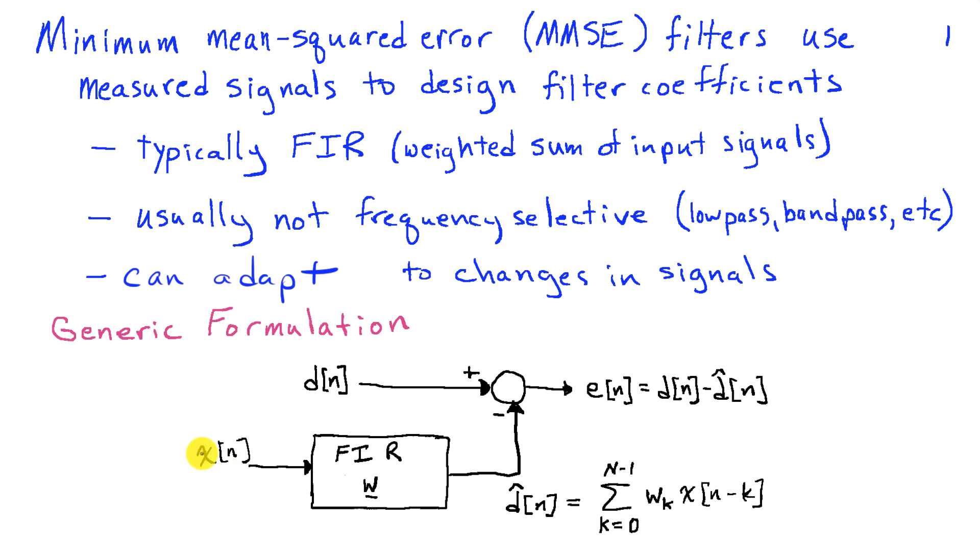And then we have another signal, x of n. And the idea is to choose filter coefficients w, and the underscore just means that I'm collecting those in a vector. So this underscore denotes vector.